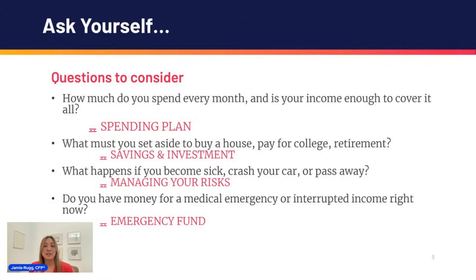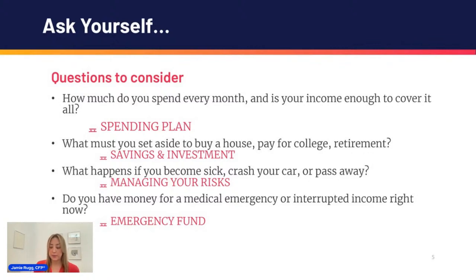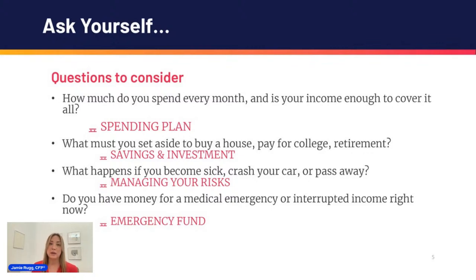Other things to consider: what do you want to set aside if you wanted to save for retirement, potentially buy a new car, buy a house, pay for college? What do we need to set aside for the future? That's going more towards saving and investment. If something were to happen — whether it's losing a job, becoming sick, a loved one is ill — how do you ensure you're taking care of those potential risks? That's where insurance or managing risks comes into play.